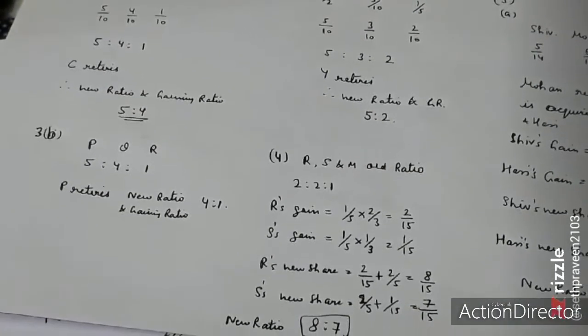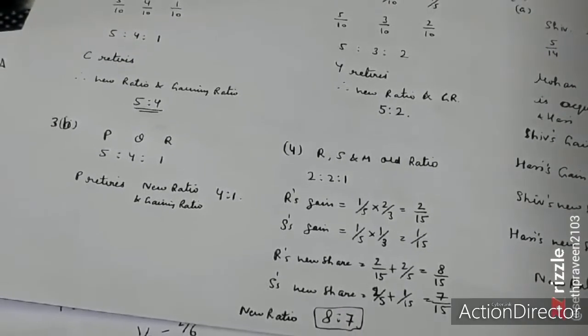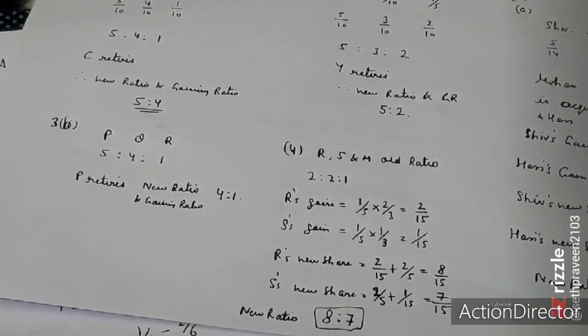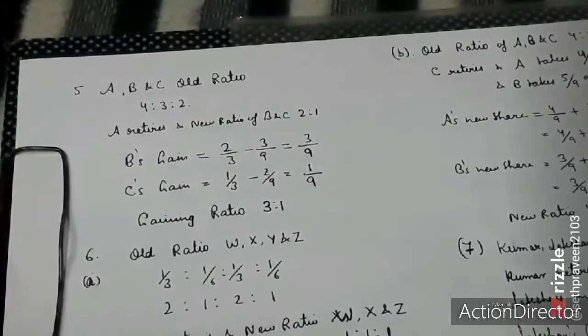The old ratio of RSM is 2 to 1. M is retired. R and S gain in the ratio 2 to 1, which means the gain is 1 by 5 and 1 by 10. Adding to the old share, the new share comes to 8 to 7. R and S will get a gaining ratio of 2 to 1.